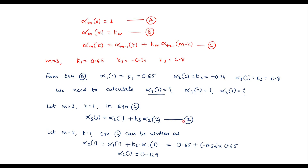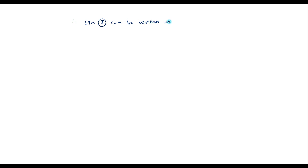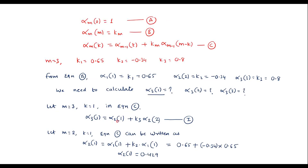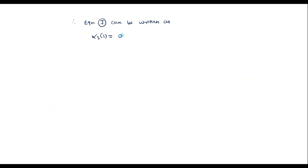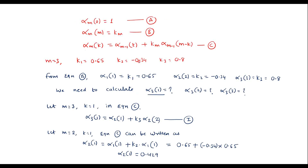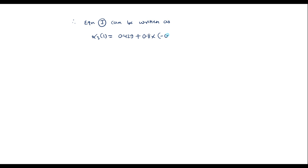Substituting α_2(1) into equation 1: α_3(1) equal to 0.429 plus k3 times α_2(2) equal to 0.429 plus 0.8 times (minus 0.34). Simplifying, α_3(1) equal to 0.157.